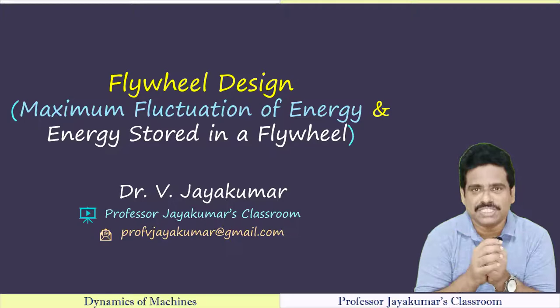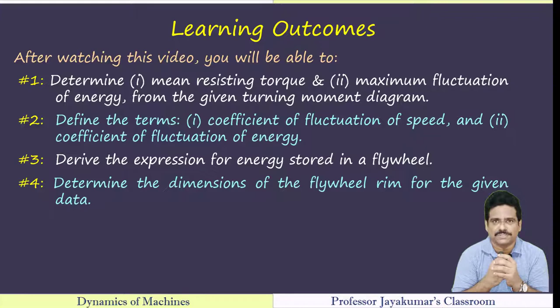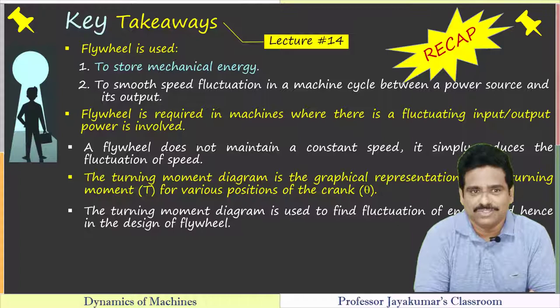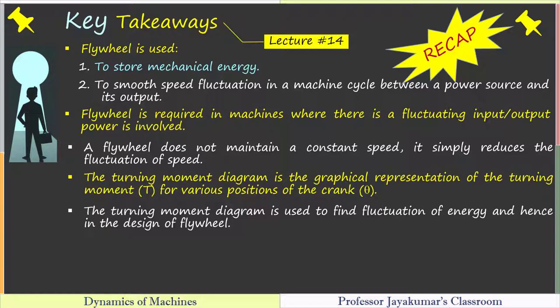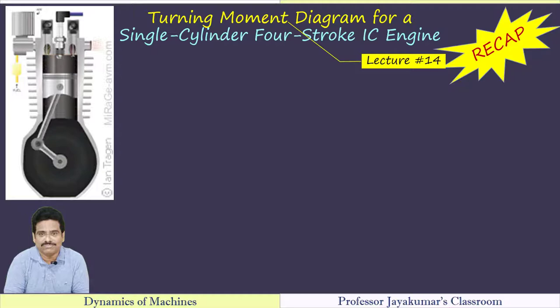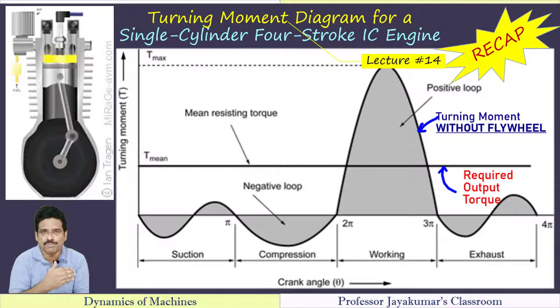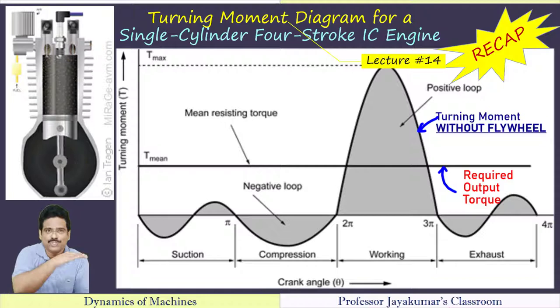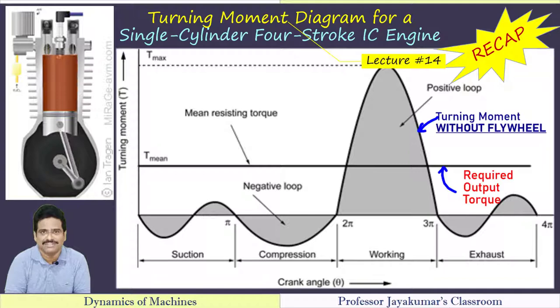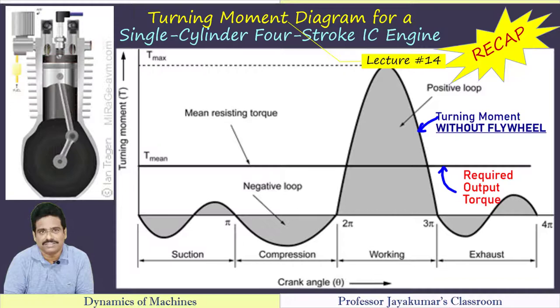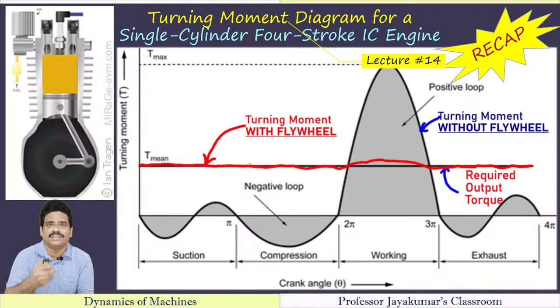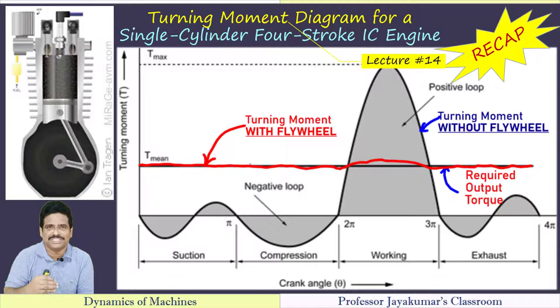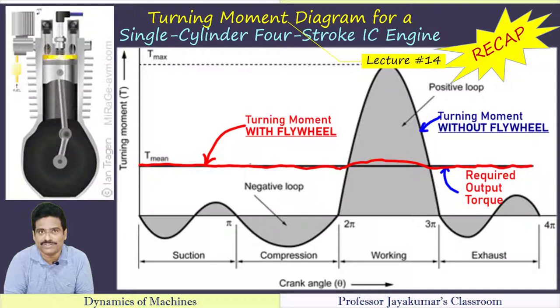You can watch all my previous lecture videos using the links given in the description below. These are the various learning outcomes. To start with, we must know some prerequisite concepts — the key takeaways of the earlier lecture. We presented a turning moment diagram for a single-cylinder four-stroke engine. The input torque produced by the engine is very fluctuating, whereas the output torque required by the application is constant, which we call T_mean. Our aim is to reduce the fluctuation of this turning moment, and we introduce the flywheel — the red line shows how the earlier fluctuation has smoothened.